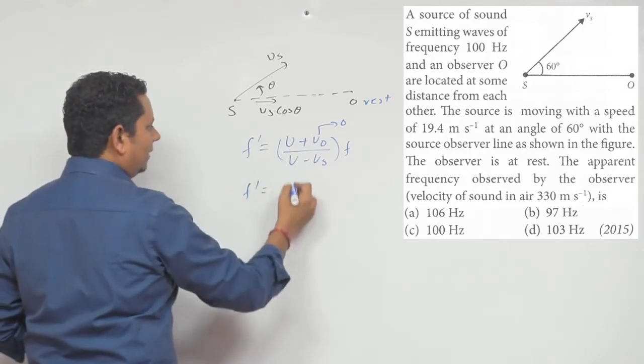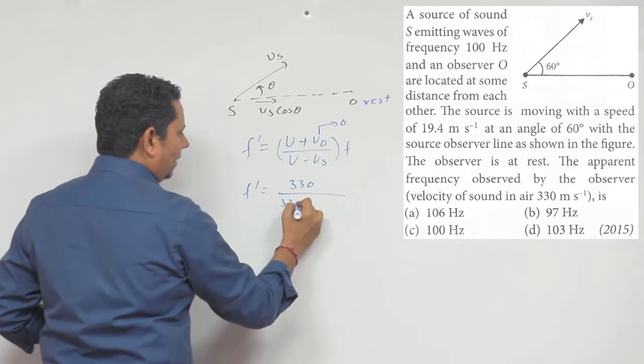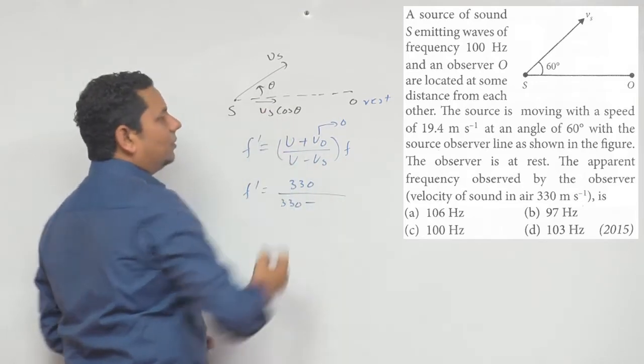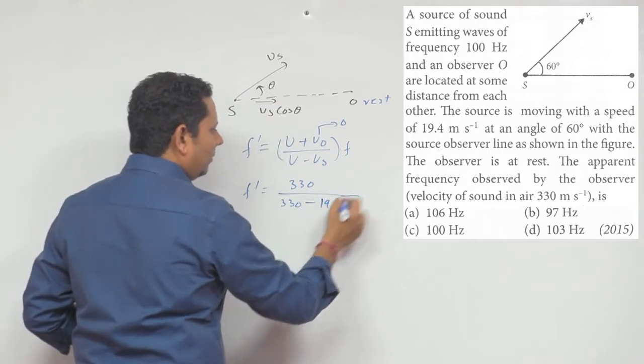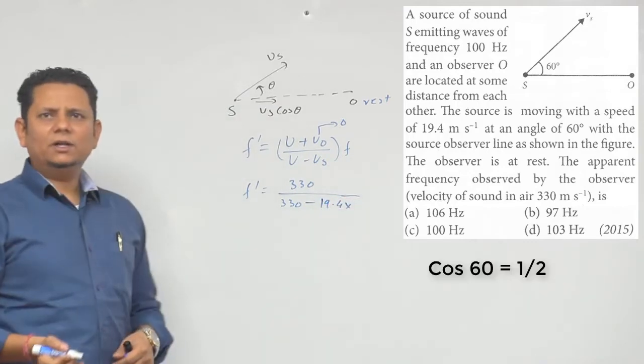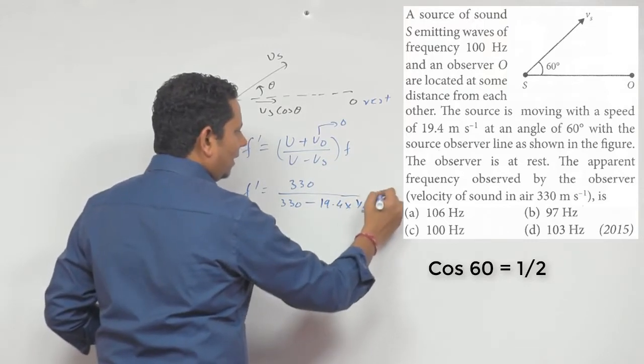this will be direct data, so this will be 330 plus 0 divided by 330 minus velocity, which is 19.4 multiplied by cos 30. Cos 30 value is half, so this will be multiplied by half multiplied by 100 hertz.